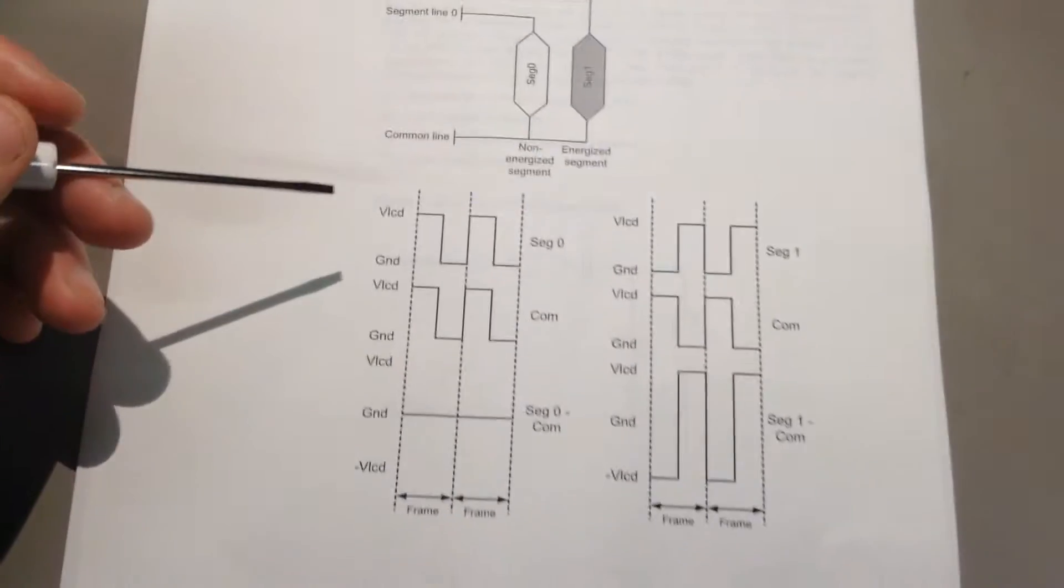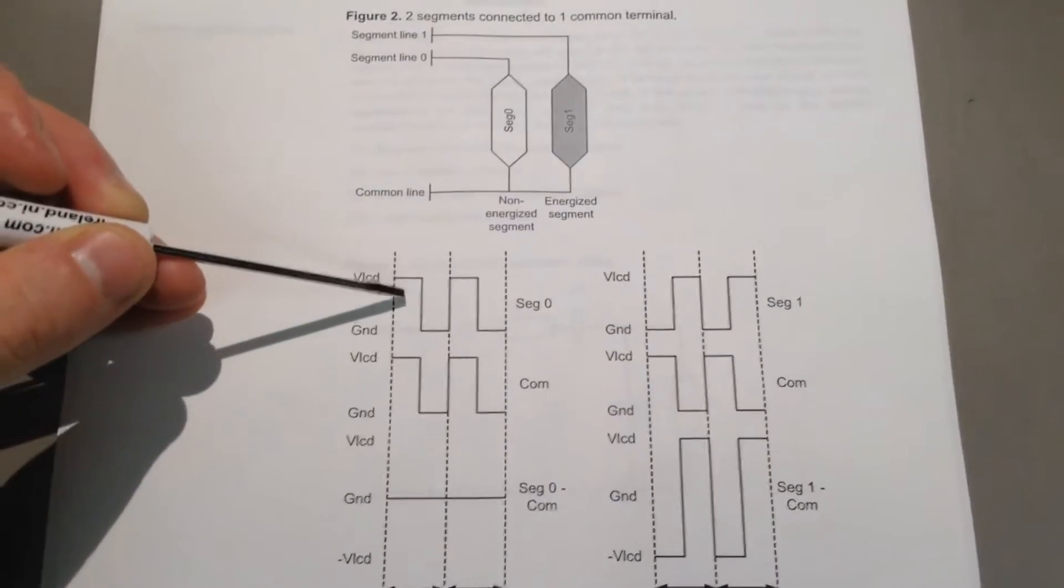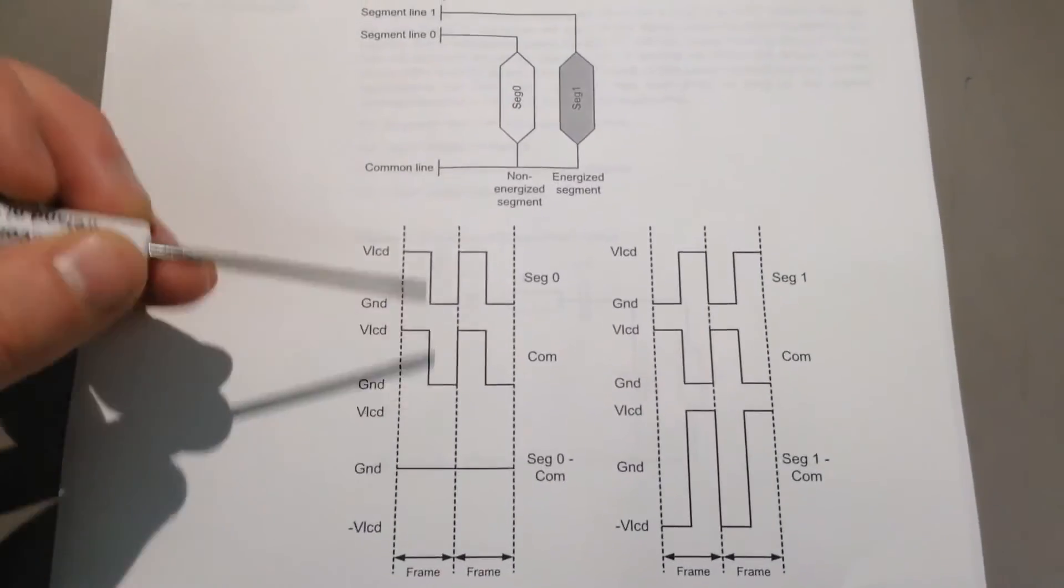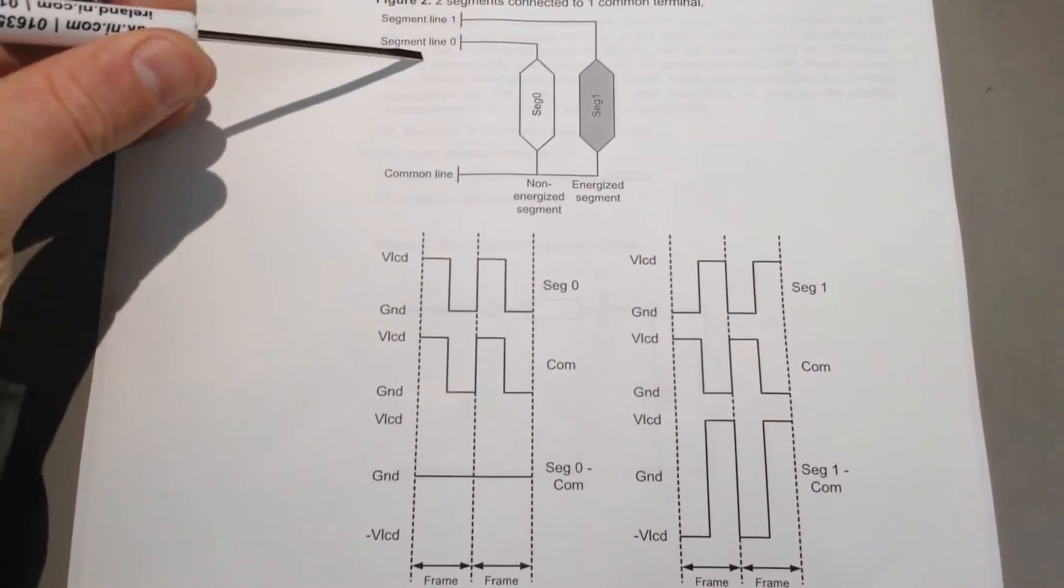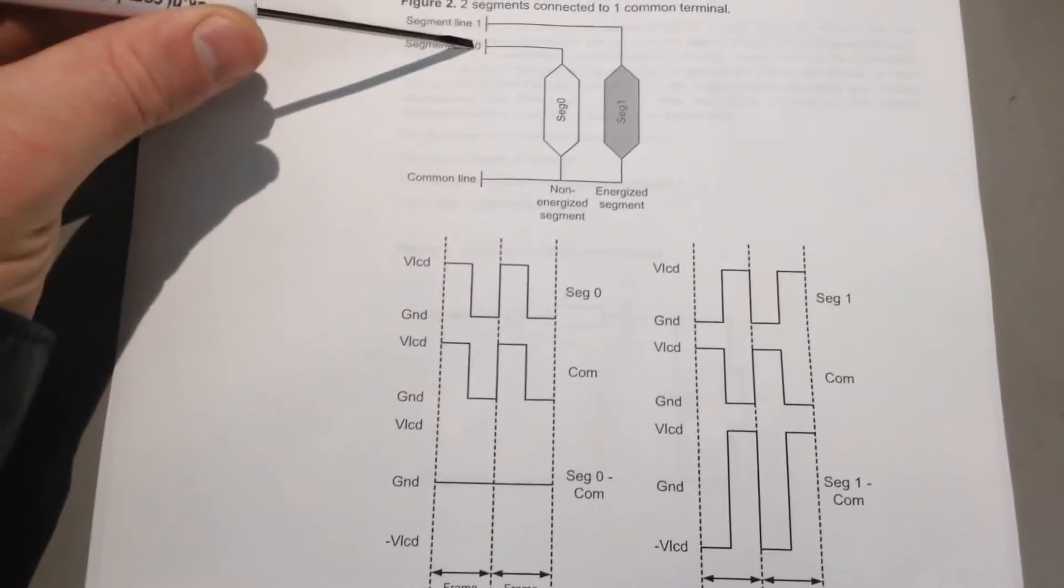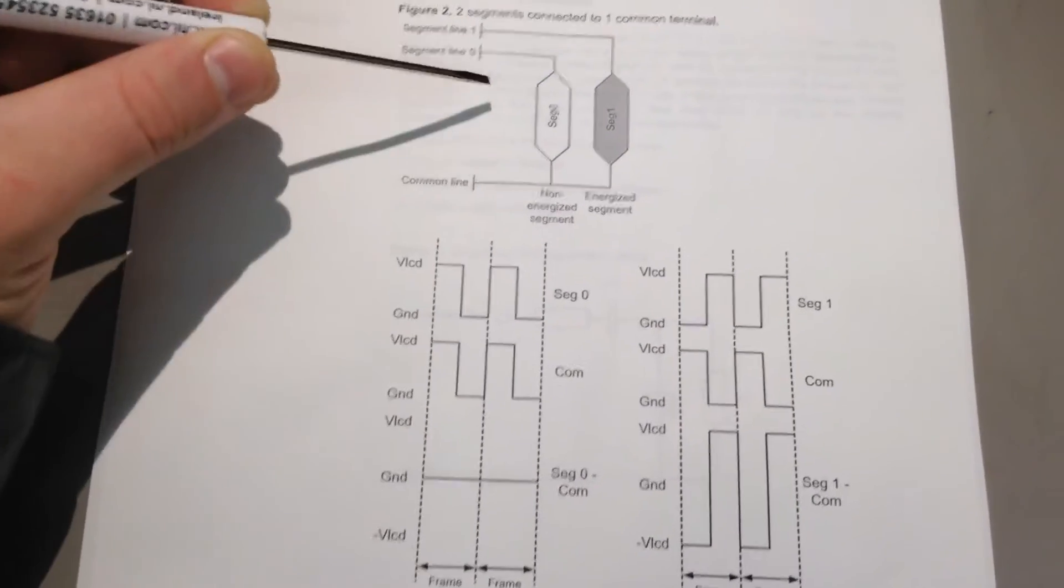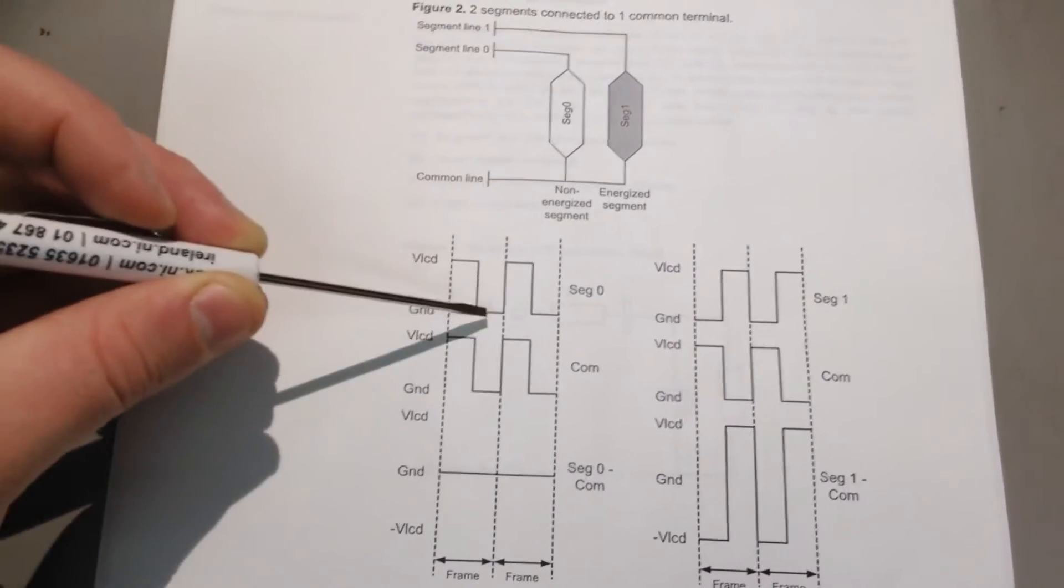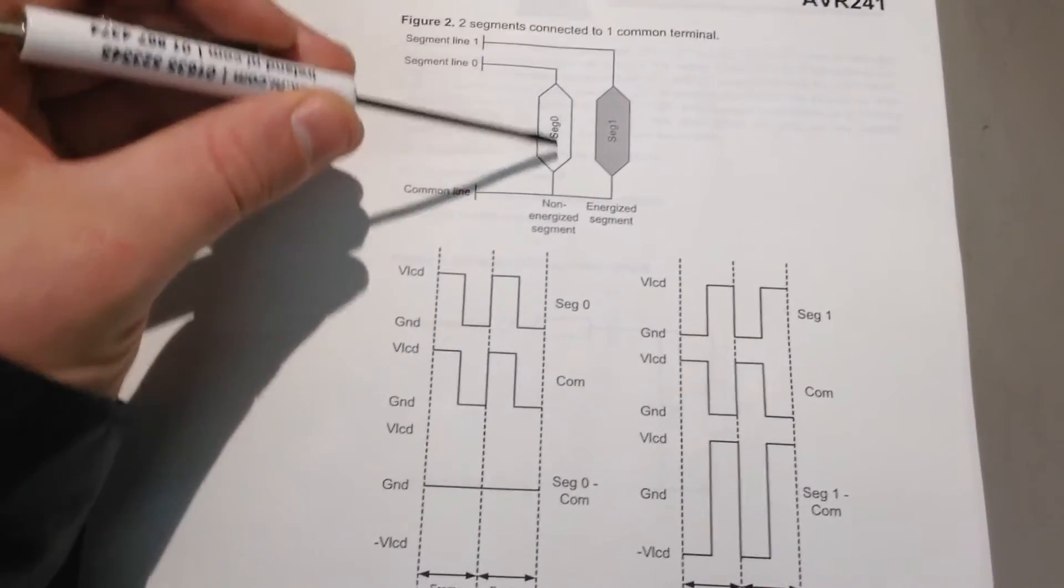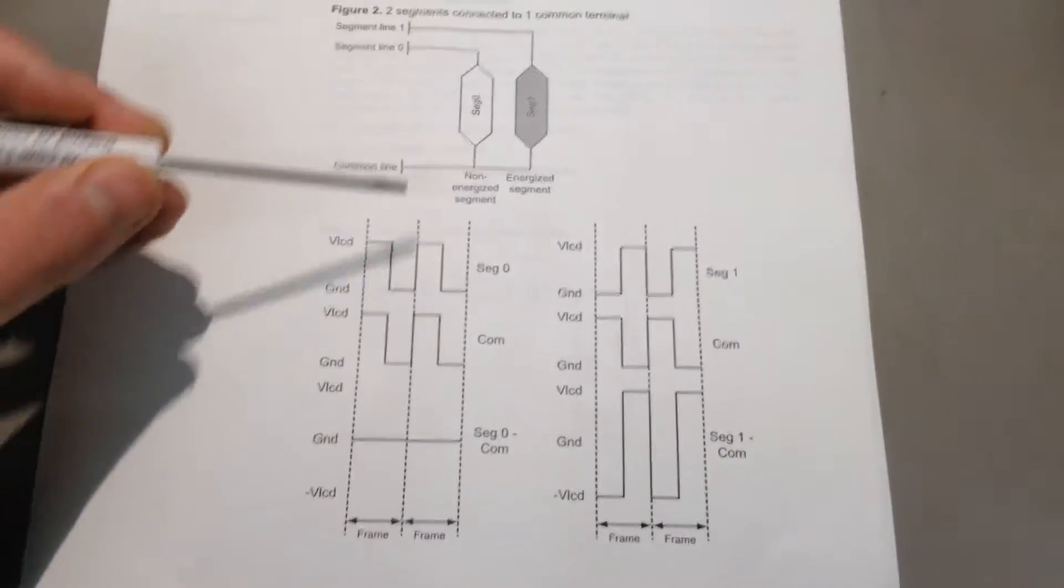So how do we get in here current without degrading it? Now, it's a clever trick. We have two signals here in phase with each other. So when it's high, that's high. When it's low, it's low. And what you do, you apply the same signal to segment line 0 and the com line. So that means the difference, if that's at 5 volts and that's at 5 volts, then our difference between the two signals is nothing. If this is at 0 volts and this is at 0 volts, then again, our difference between the two signals is nothing. So no current flows that way or that way when both signals are in phase.